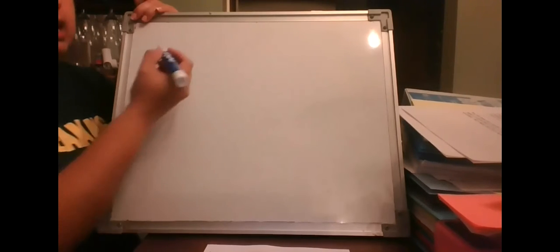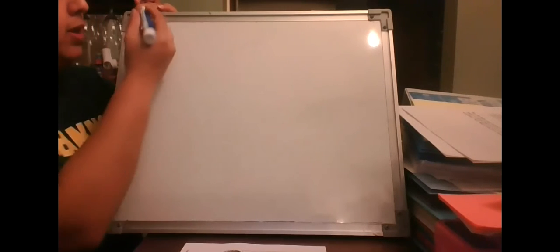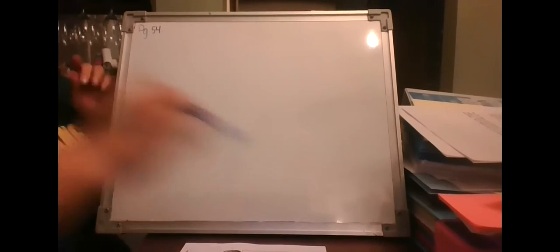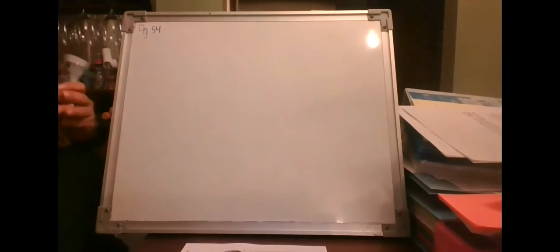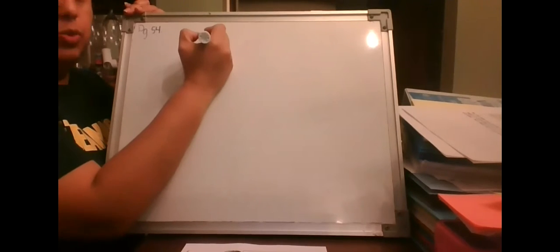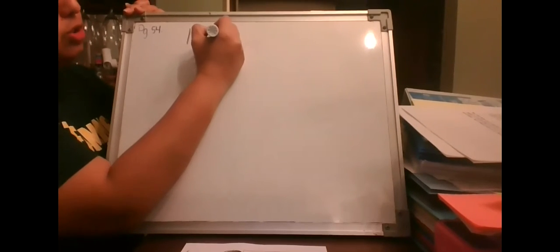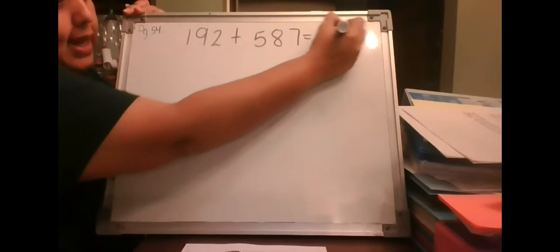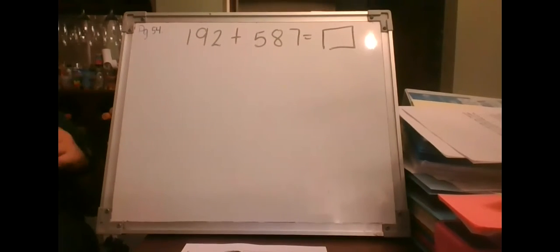I'm going to review the different ways that you can solve these problems. The first one on the bottom of page 54 — remember, these are the ones we're doing together, these are not problems you're going to turn in, so we're both doing page 54. We have 192 plus 587 equals my answer.